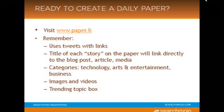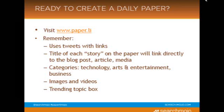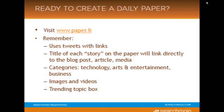So if you're ready to create a Paper.li account, you can log in with the Twitter account that you'd like to set up the daily for. In our case, we use the Search Mojo Twitter account. As I mentioned, Paper.li is looking for tweets with links, and the title of each story on the paper will link directly to that content, whether it's a blog post or an article. Inside the paper, there are different sections just like a regular newspaper, like technology, arts and entertainment, and business. Not only does it pull the link, but if there's media associated with it, it will also pull in images and videos. And there's a trending topic box on there as well.